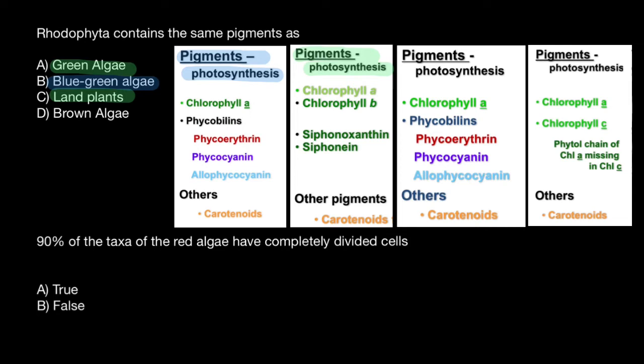The first picture here stands for the blue-green algae, and we can find here chlorophyll A, which is going to be the primary pigment in the blue-green algae. And in brown algae, we can find chlorophyll A and C, which is different from both blue-green algae and green algae.